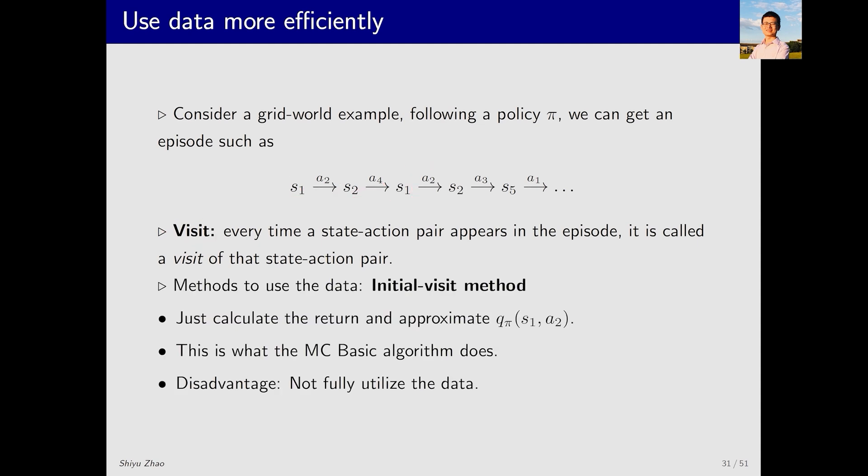In MCBasic, we typically use the initial visit method. What does it mean? It means that for each episode, we only consider S1, A2, and we use the return obtained from the remaining part of the episode to estimate the action value of S1, A2 and approximate Q_π(S1, A2). The problem with this approach is that it doesn't fully utilize the episode. Many samples are wasted.